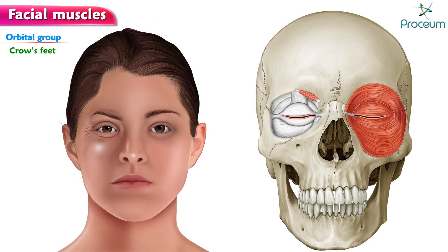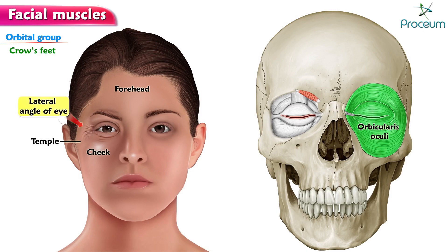Crow's feet. The contraction of the entire orbicularis oculi draws the skin of the forehead, temple, and cheek towards the lateral angle of the eye, producing radiating skin folds from the lateral angle of the eye, which may be a permanent feature in some old people, forming the so-called crow's feet.